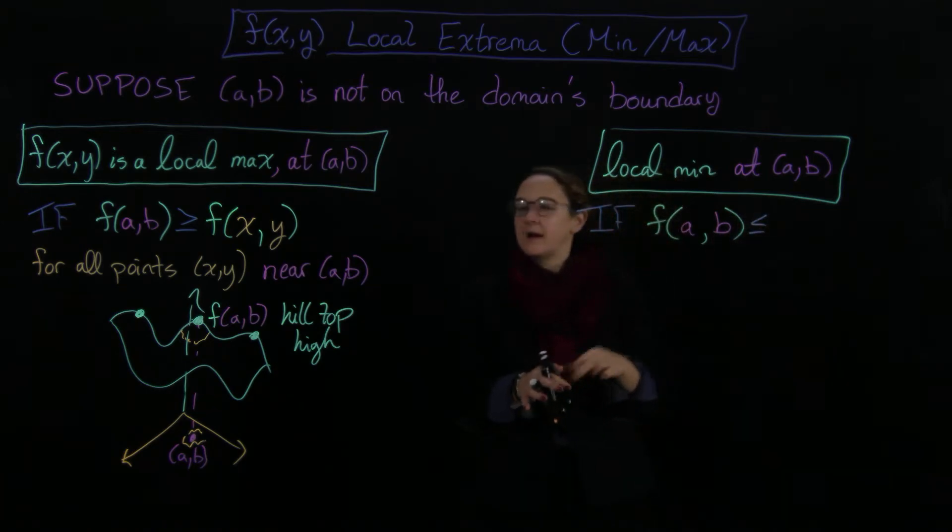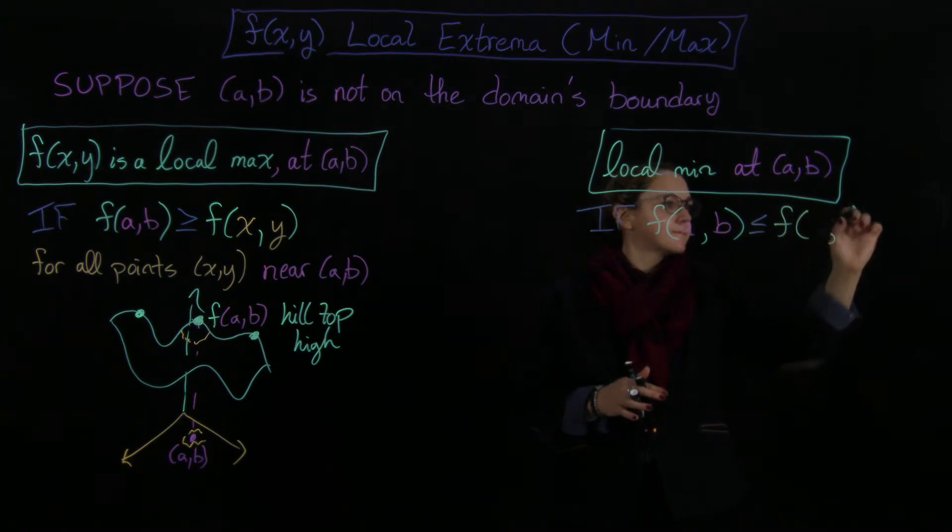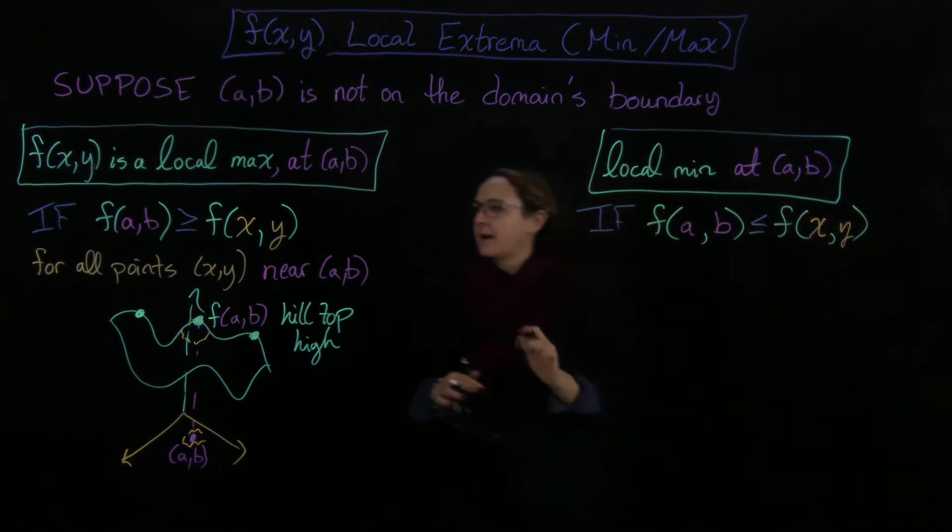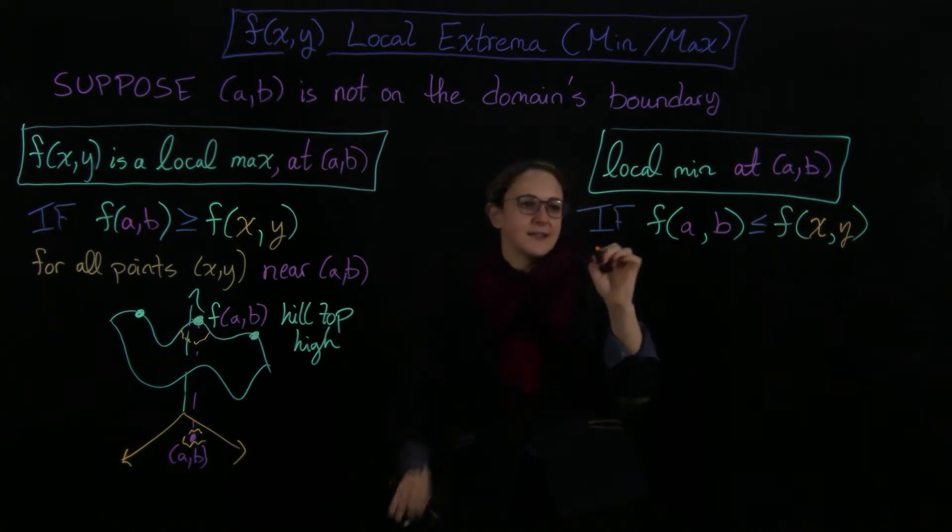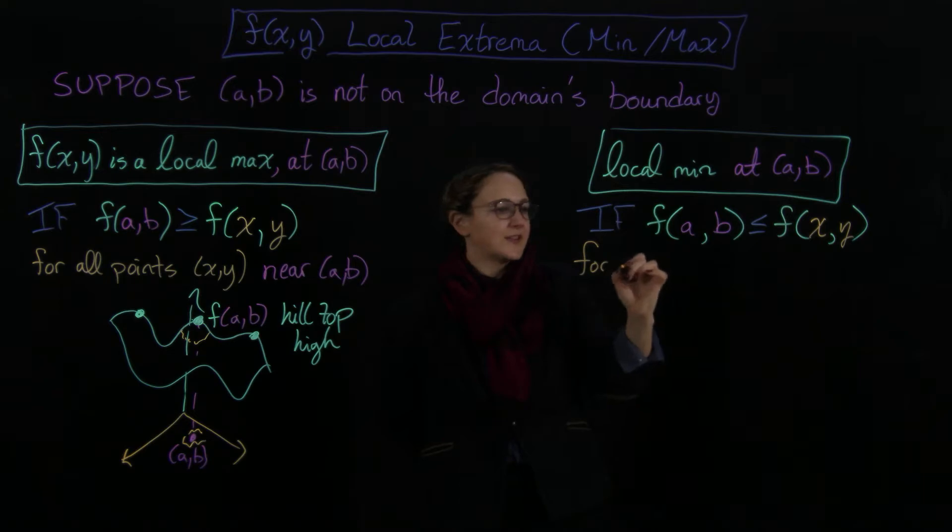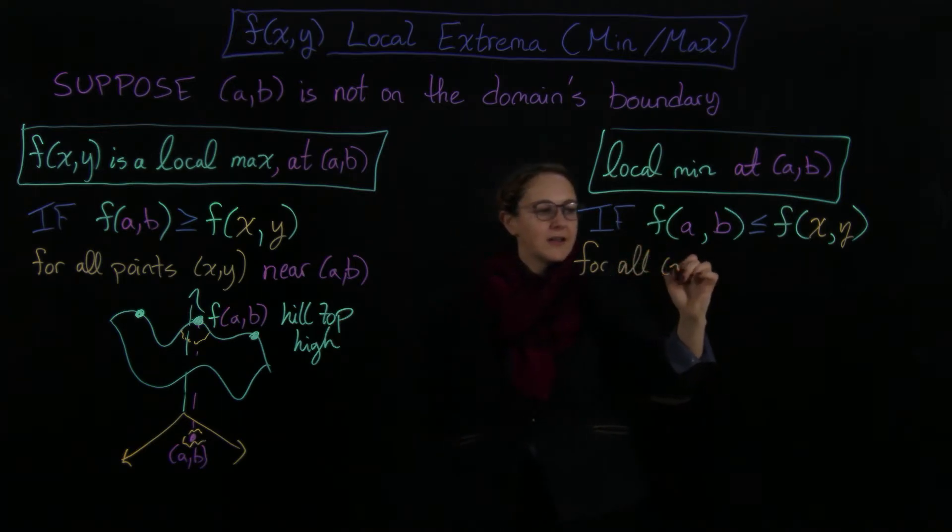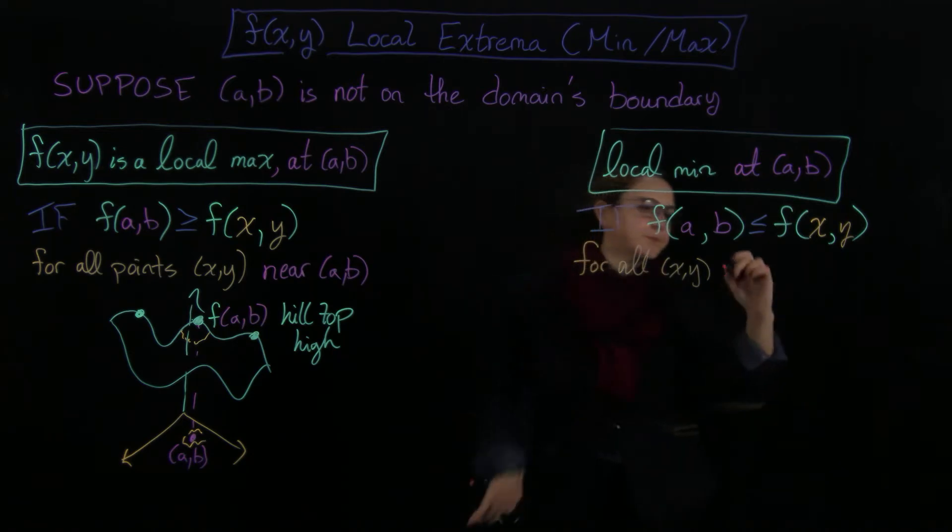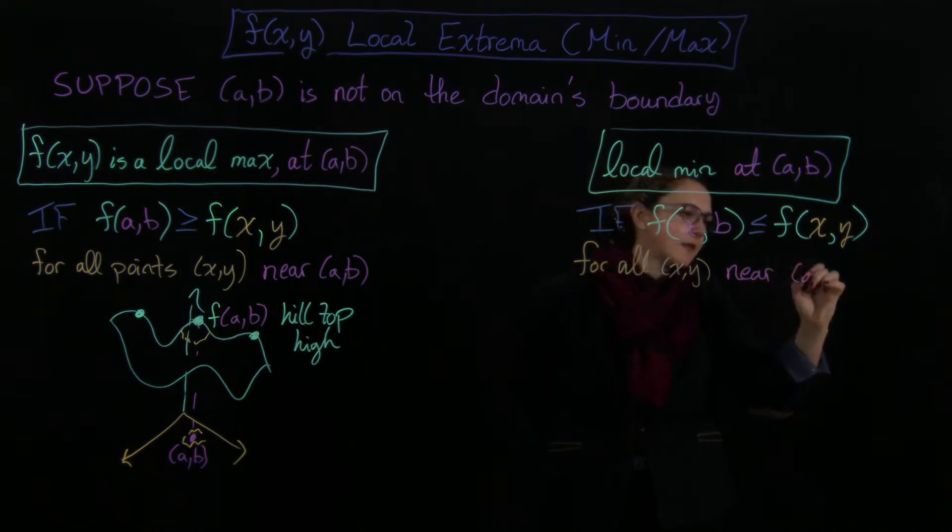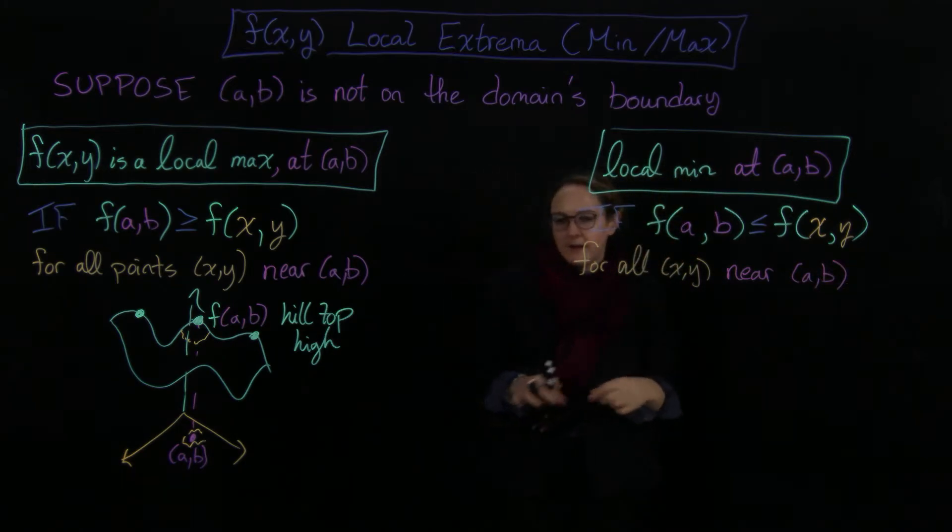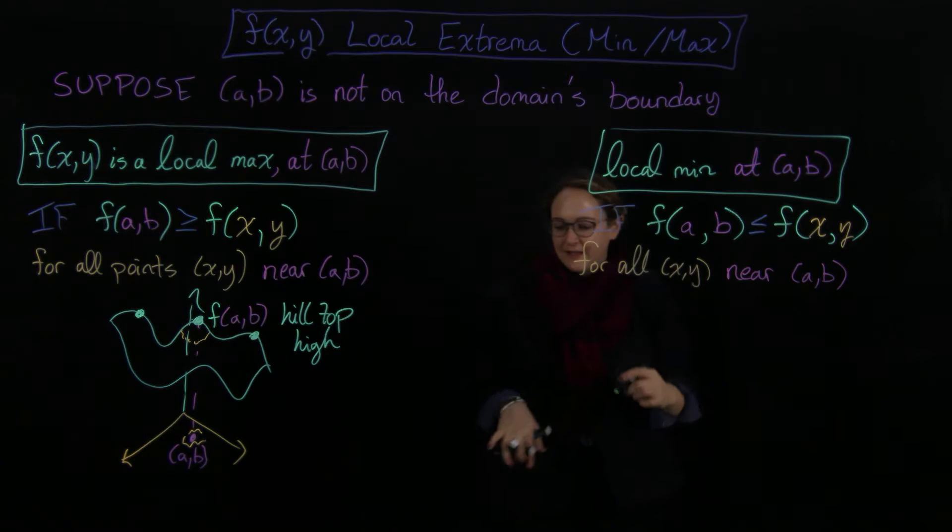So f(x,y) for all points (x,y), and this is exactly the same thing. We're just looking nearby, because that's what, when we have the local in front, that's what it means. So for all (x,y) near (a,b).